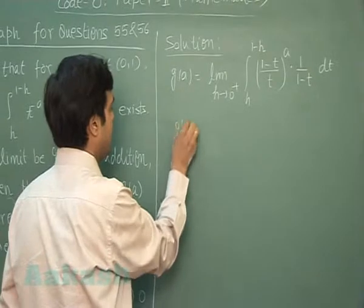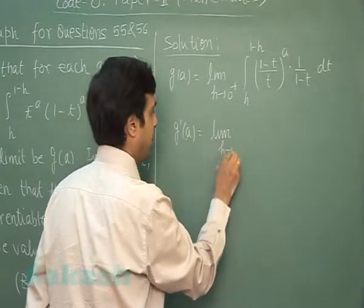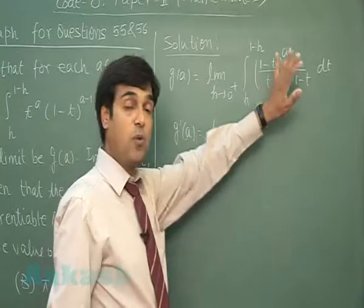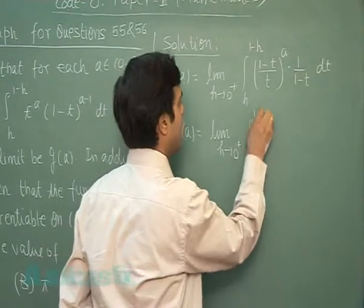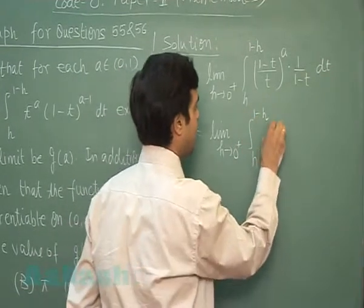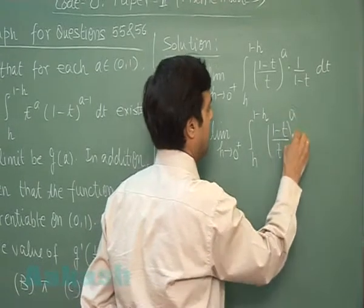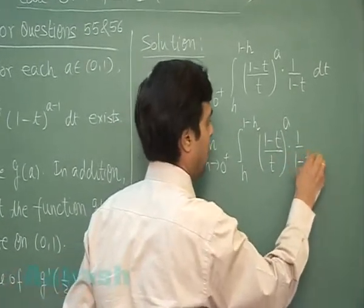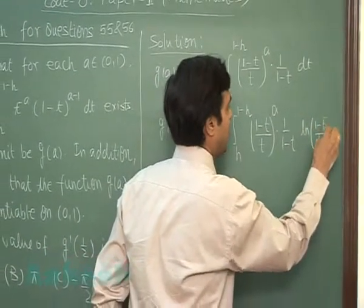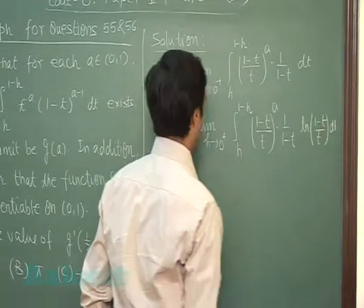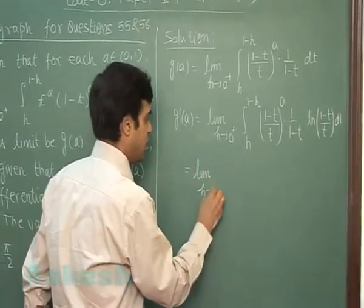Differentiating it with respect to a, we get this derivative term goes inside the integral as the partial differentiation definition: integral h to 1-h of log((1-t)/t) dt.